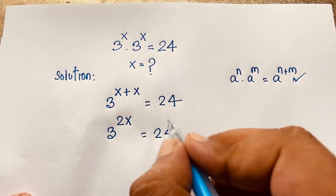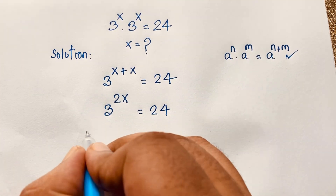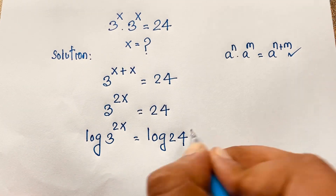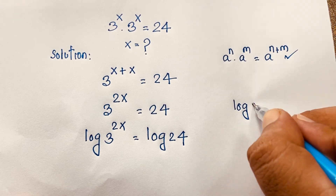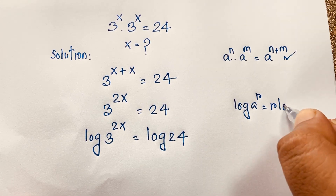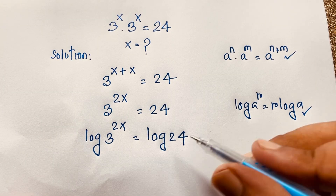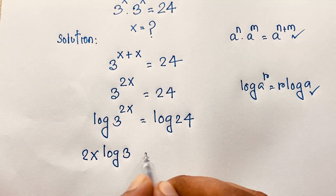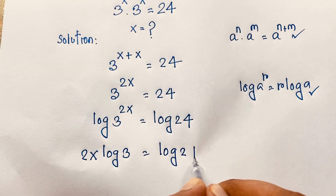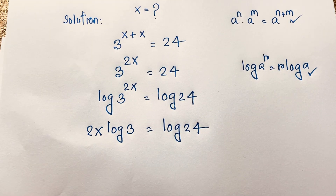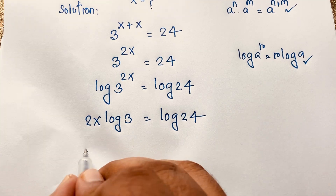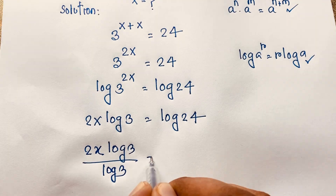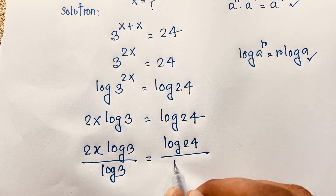Then at this moment I use the natural log. So log of 3 to the power 2x is equal to log 24. Then using the rule log a to the power r equals r·log a, if I apply this math formula here, you can see this exponent moves to the front. So it will be 2x·log 3 is equal to log 24. Now at this moment I divide both sides by log 3. So log 3 over log 3 equals log 24 over log 3.